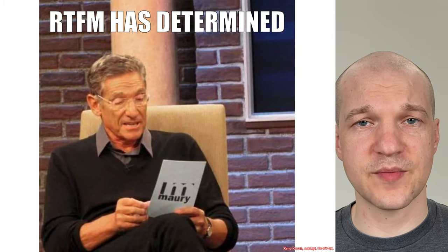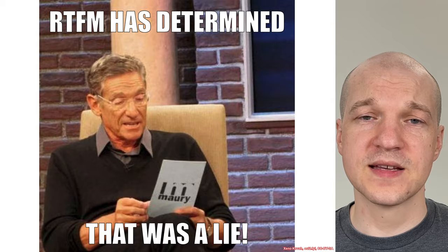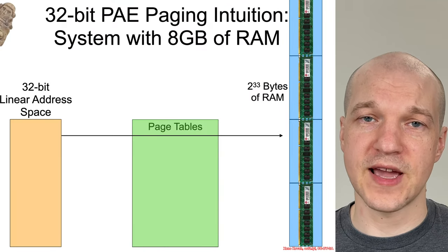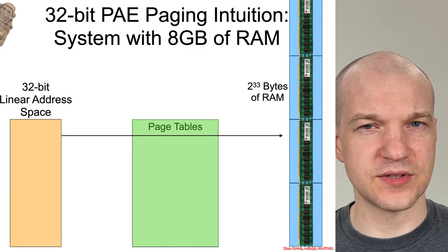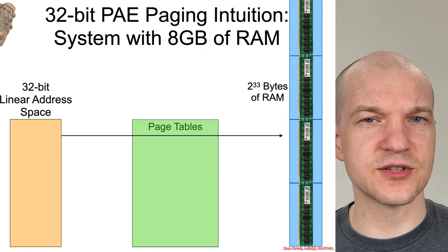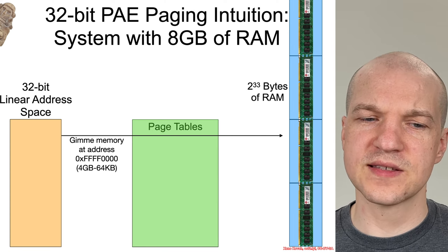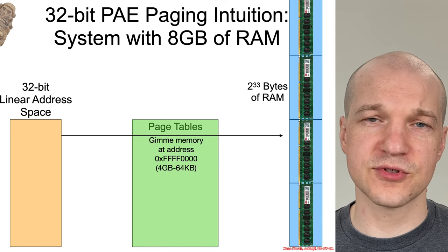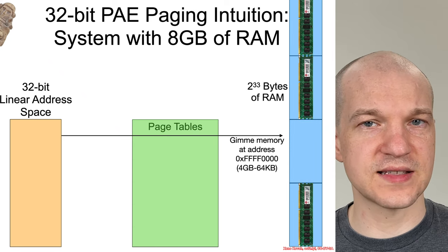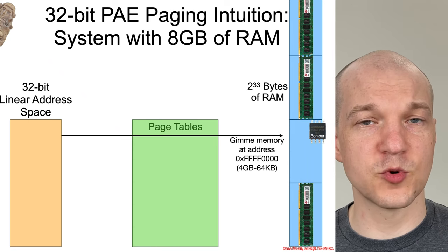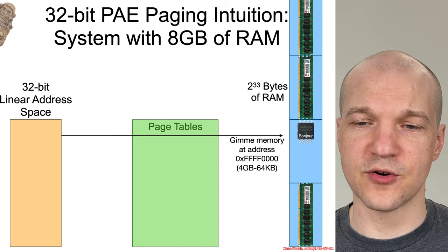Well, RTFM has determined that was a lie. The reality is we've already seen that that FFFF000 range actually maps to the SPI flash chip. So that goes through a page table, and instead of accessing RAM, what you're doing is memory mapped I/O.